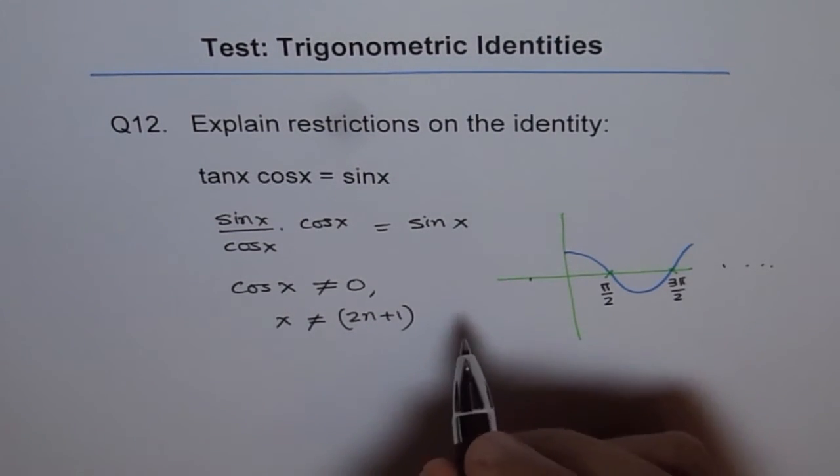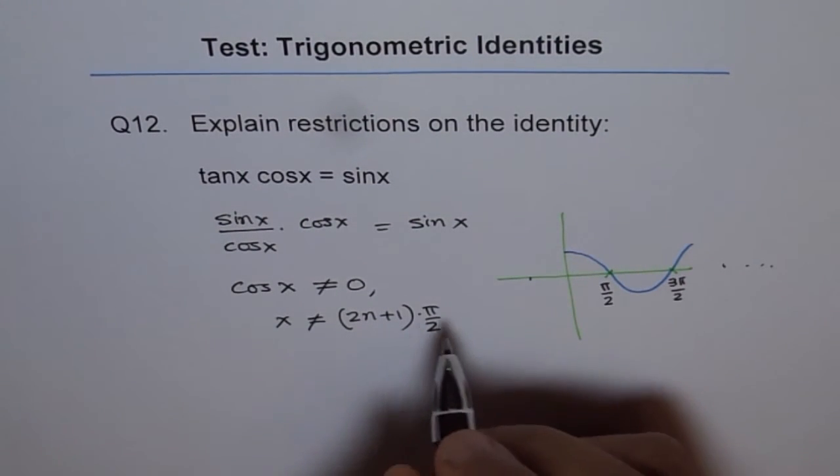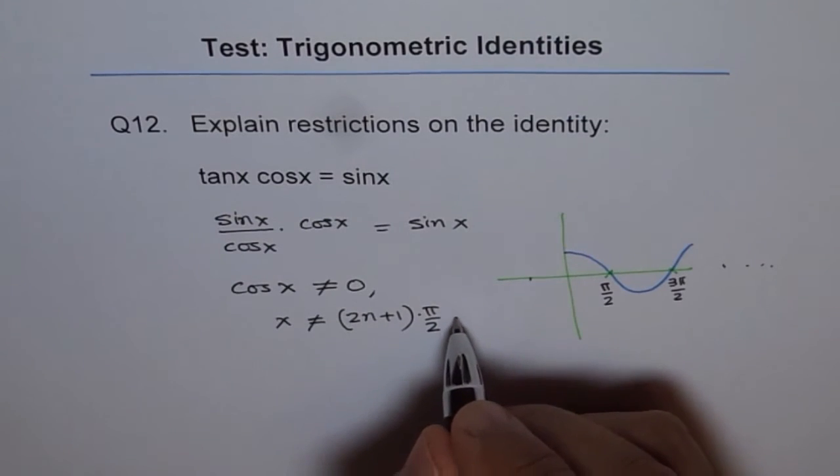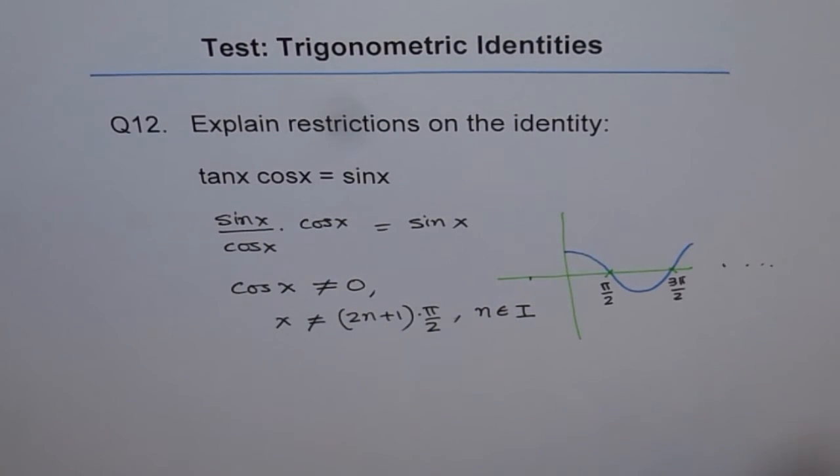2n, n is any natural number times pi by 2. We can say n is an integer, that would be better, otherwise I have to write plus minus. So I will say n belongs to set of integers.